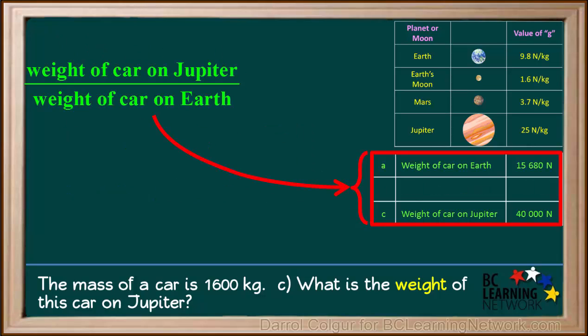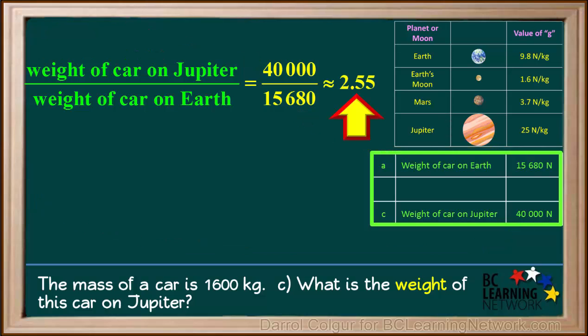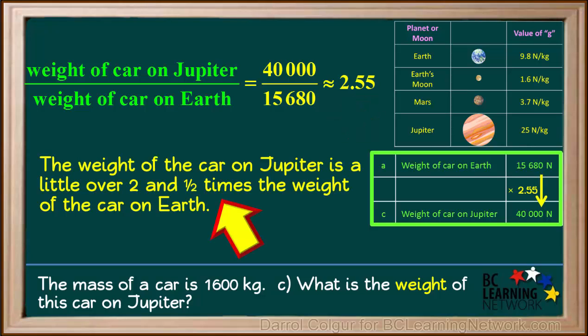Comparing the weight of the car on Jupiter and Earth, the ratio of the weight on Jupiter to the weight on Earth is 40,000 newtons divided by 15,680 newtons, which comes out to approximately 2.55, or a little over 2.5. So the weight of the car on Jupiter is a little over 2.5 times the weight of the car on Earth.